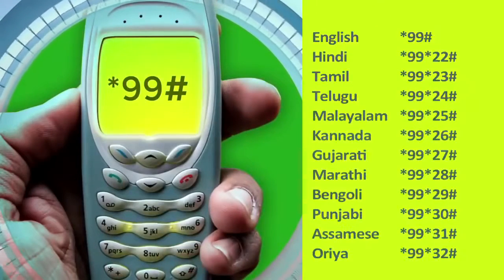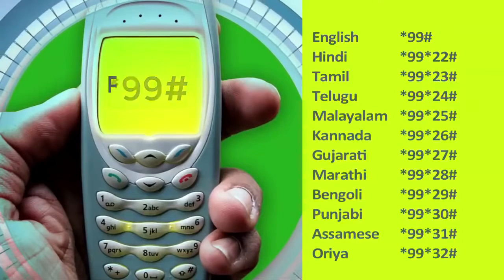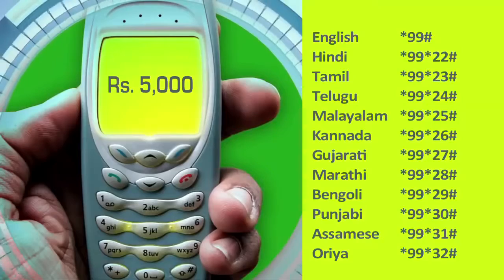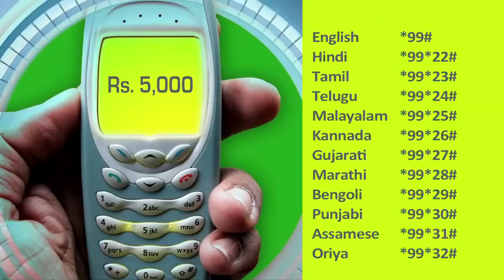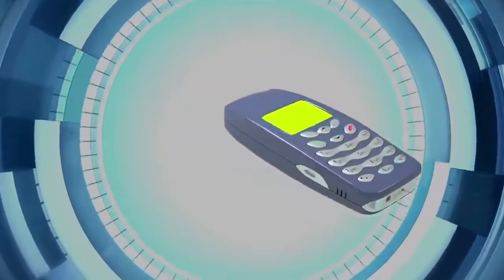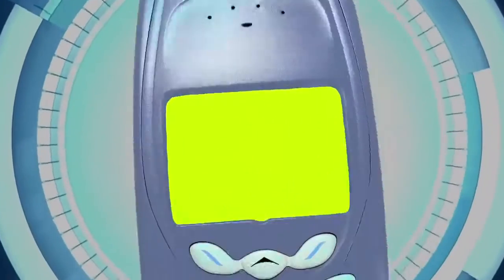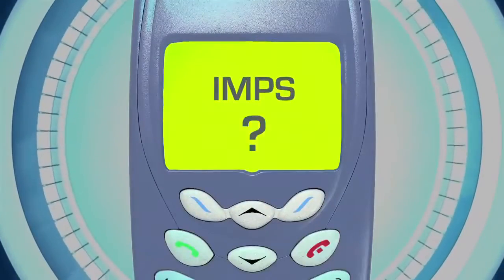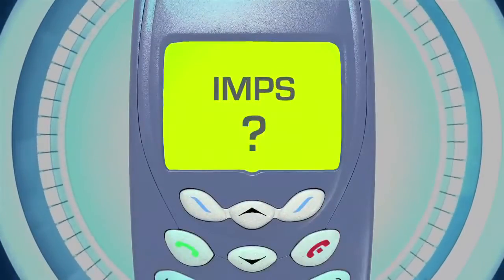Just go to the bank once and get your mobile number linked, then type *99# and you could transact up to five thousand rupees every day. But first, let us understand what IMPS is.